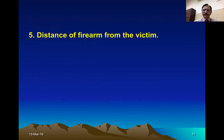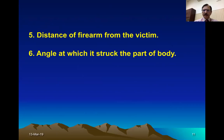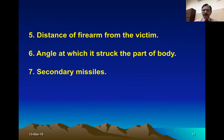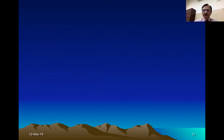Then the distance of fire from the victim — the firearm depending upon the range from the victim will show its characteristics. Then the angle of fire: right angle, tangential, from above, from below. Then secondary missile formation — this missile can be generated from outside the body when the bullet strikes something like glass or metal, which may be fragmented, or the parts of the subject struck become the secondary missile. Within the body, if it strikes bone, bony fragments can become secondary missiles. Then the type of ammunition — smoke, smokeless, or other components of the ammunition can change the appearance of the wound.